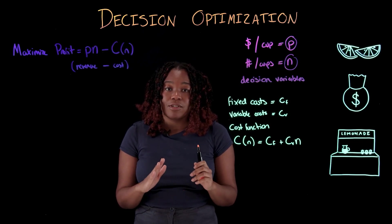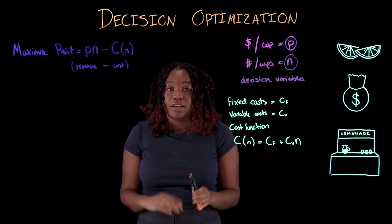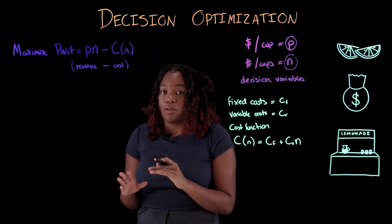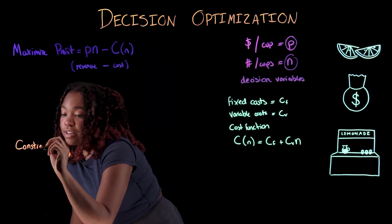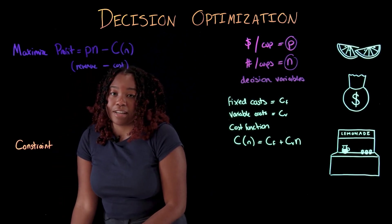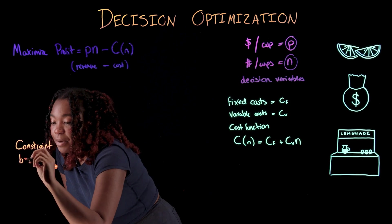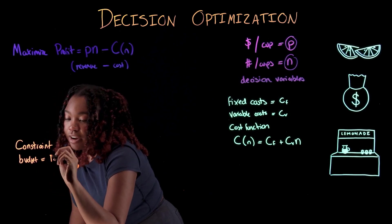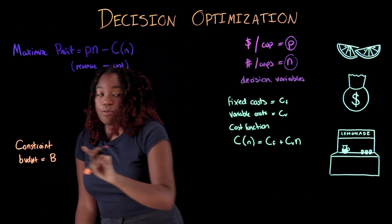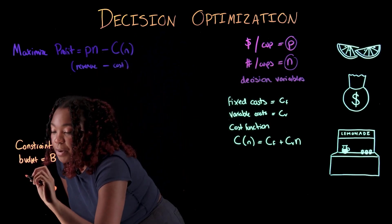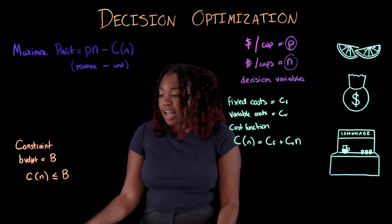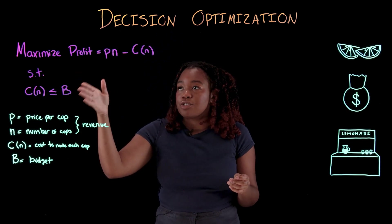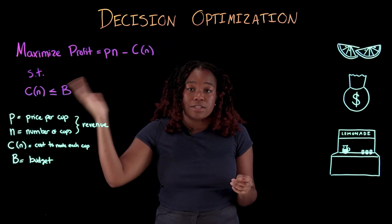However, there's one more thing that makes our lives a little harder, and those are constraints. Constraints are boundaries that we have to stay within in order for this problem to work. For example, our constraint in this problem is that we do not have an unlimited amount of money to build this lemonade stand. So we have a budget, which we can set as a variable B. In order for this problem to be valid, our budget B must be under our costs, meaning our cost function has to be less than or equal to our budget. Overall, the goal is to maximize profit such that we don't exceed our budget.